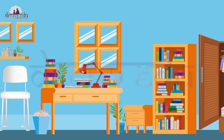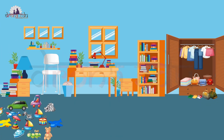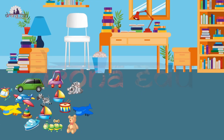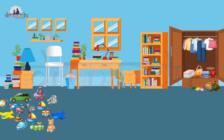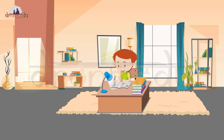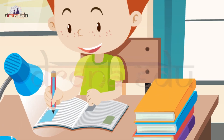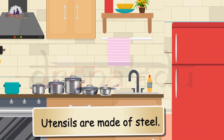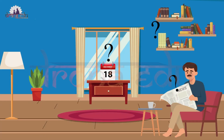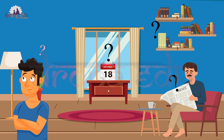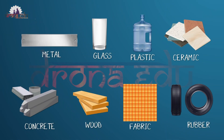We can see a variety of objects around us like books, chair, clothes, toys, and many more. All these objects have different shapes, different colors, and different uses. Some objects around us are made of wood, like chair, table, and pencil. Utensils are made of steel. Books, newspapers, and calendars are made of paper. So we observe that different objects are made of different materials.